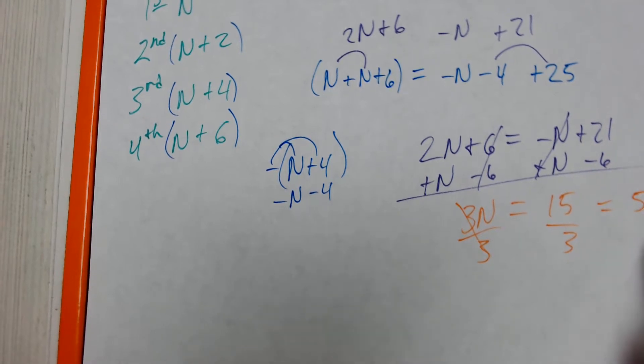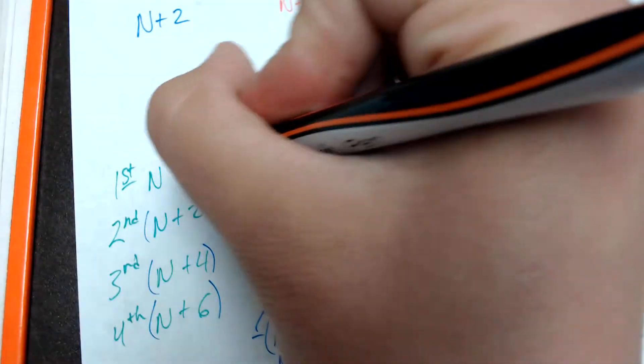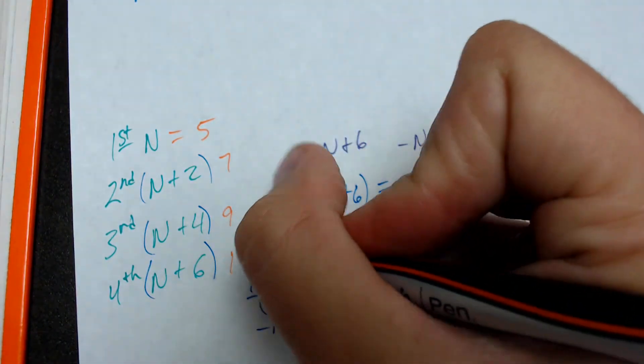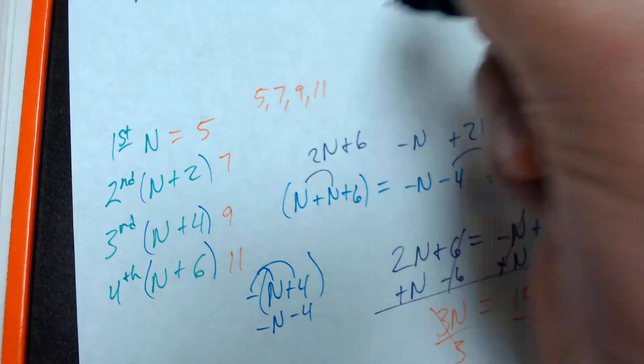Divide each side by 3. 15 divided by 3 is equal to 5. So, n is equal to 5. So, up here, n equals 5. n plus 2 is 7. n plus 4 is 9. 5 plus 6 is 11. So, my numbers are 5, 7, 9, and 11.